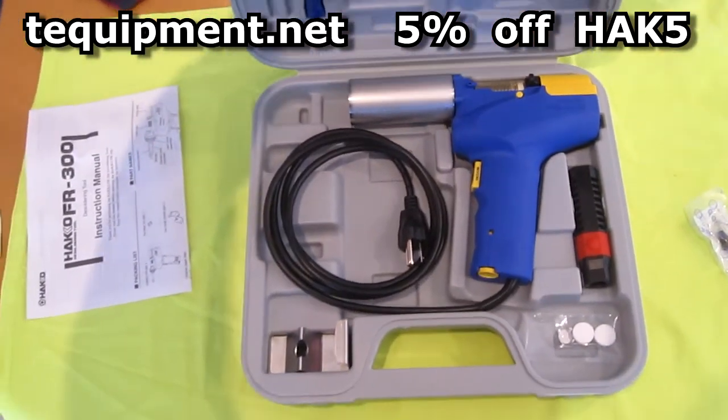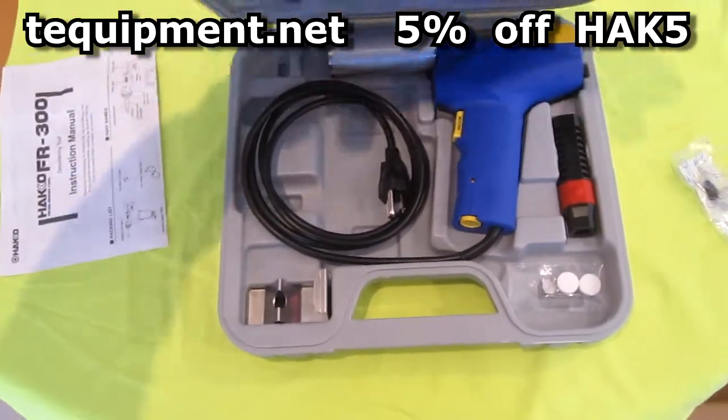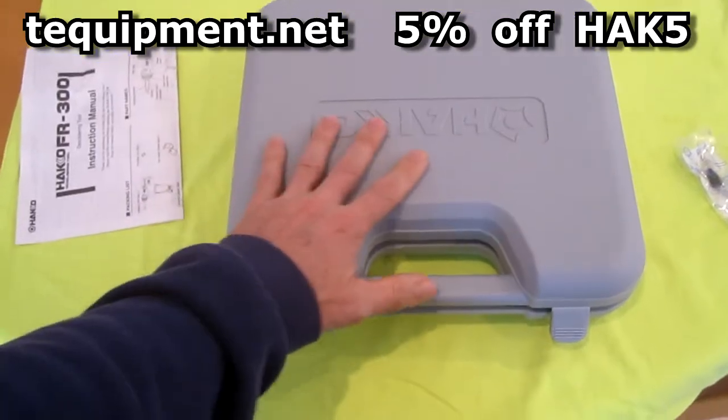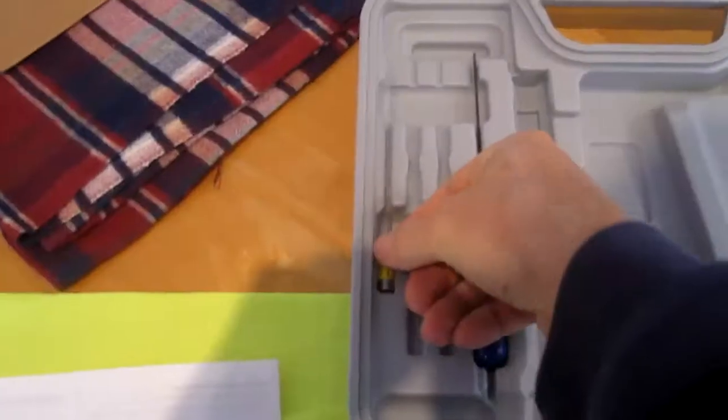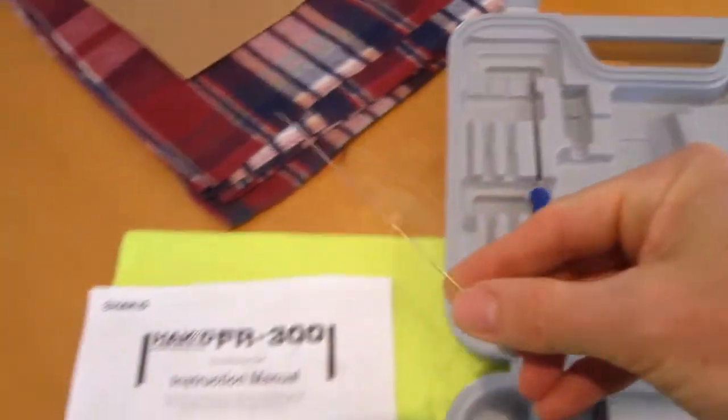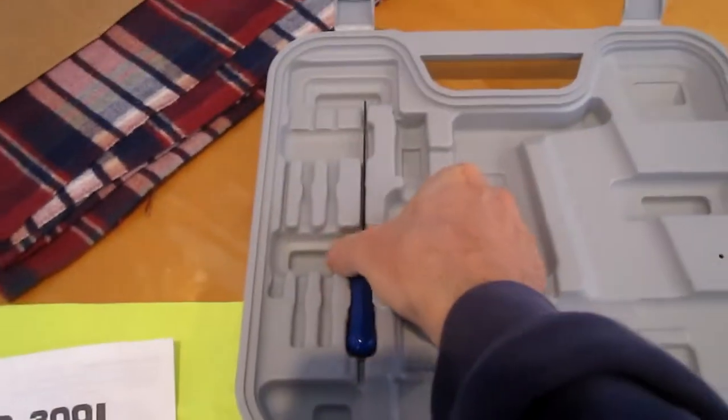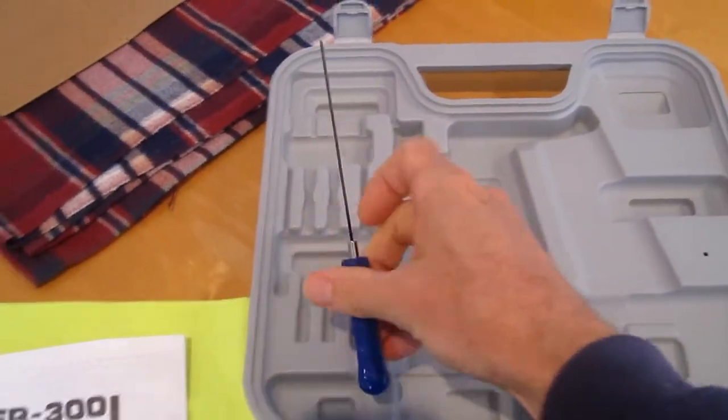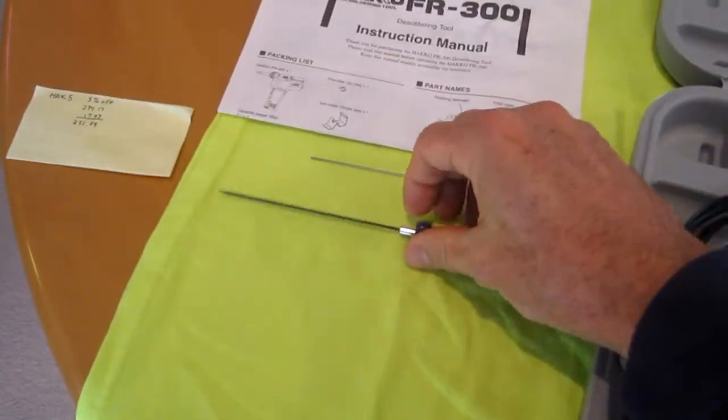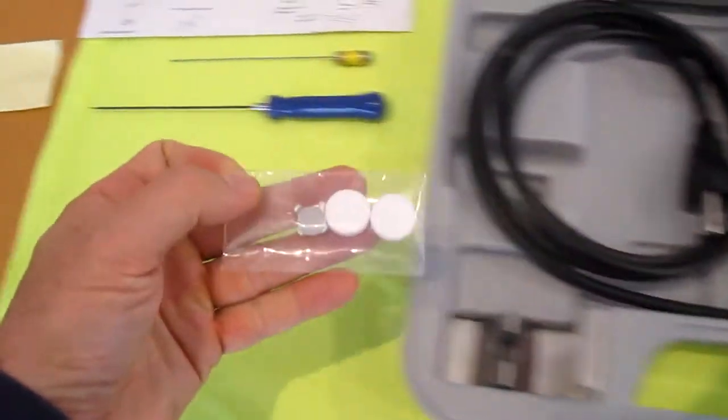You get a 5% discount with the coupon code HACK5. It comes with this cool carry case, a 1mm cleaning tip, and the heating core cleaning tool comes with some extra filters.